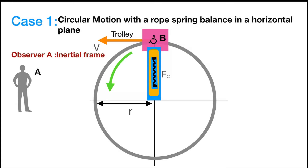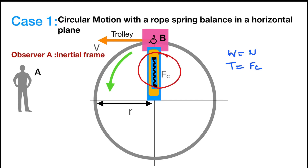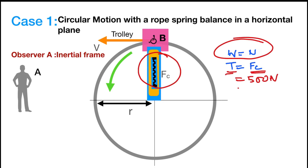Case 1: circular motion with a rope and spring balance in a horizontal plane. A trolley cabin is attached with a rope through a spring balance, moving in a circular path on a horizontal surface. As per the observer on the ground, in the inertial frame, the trolley's weight W is balanced by the normal force from the ground, and the tension in the rope provides the required centripetal force for the circular motion. The tension in the rope is shown by the spring balance. If the reading of the spring balance is 500 N, it means the centripetal force — and the tension in the rope — is equal to 500 N.